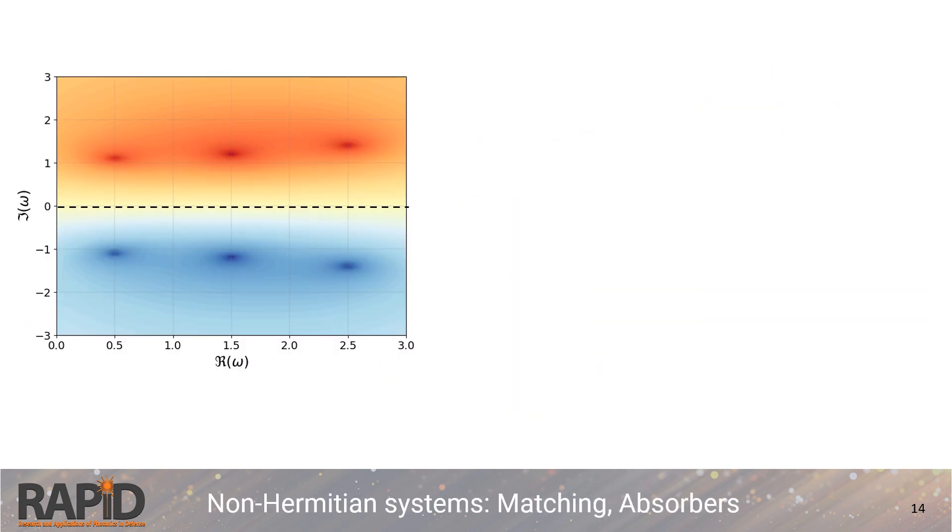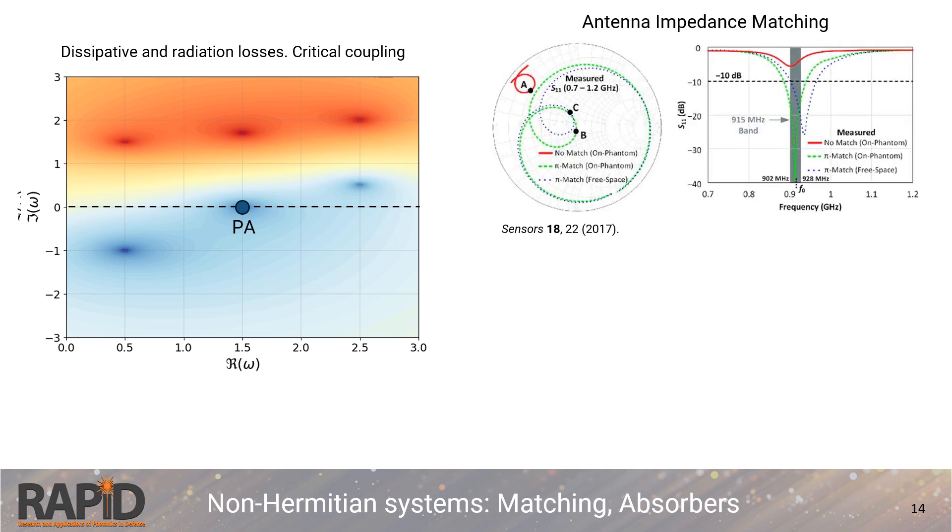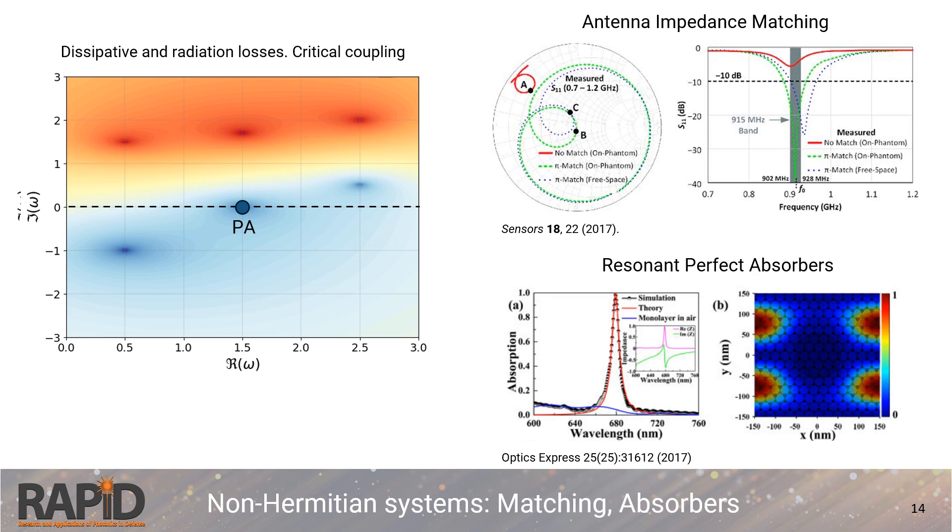Next, by starting with the Hermitian system and adding a specific amount of loss, we can shift one of the zeros to the real frequency axis, creating a zero scattering regime. This regime is crucial for applications like antenna impedance matching. It's also used in resonant perfect absorbers, which are designed to fully absorb incoming energy and convert it into forms like excitons or heat, as shown in this work on graphene monolayers.